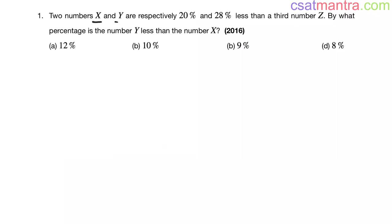Two numbers X and Y are respectively 20% and 28% less than a third number Z. By what percentage is the number Y less than the number X? This is a 2016 question. This question is from percentages chapter.